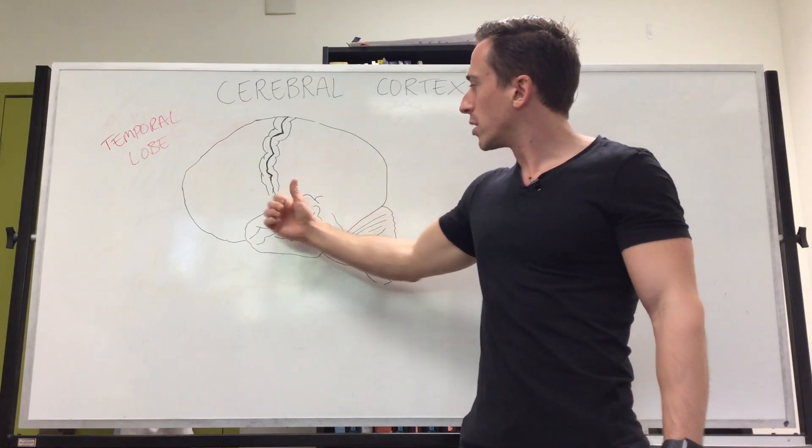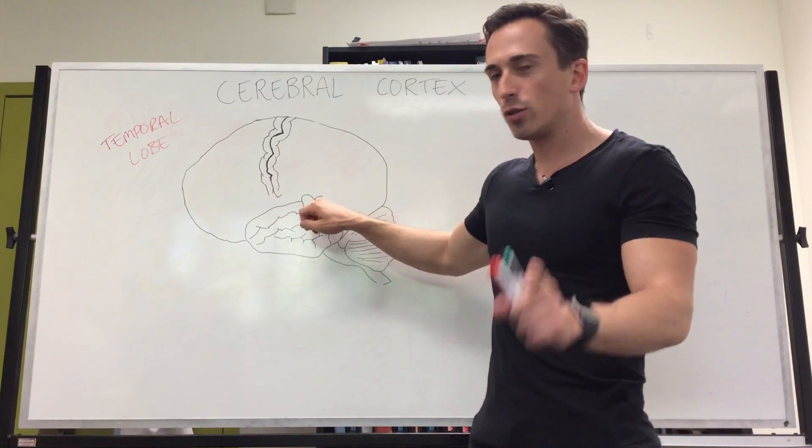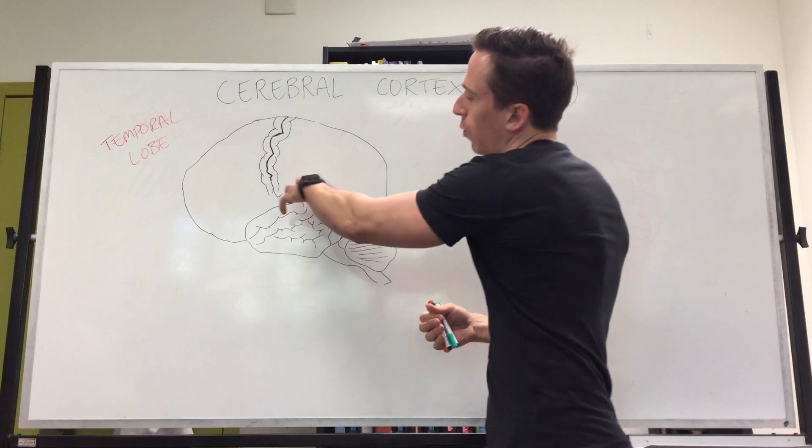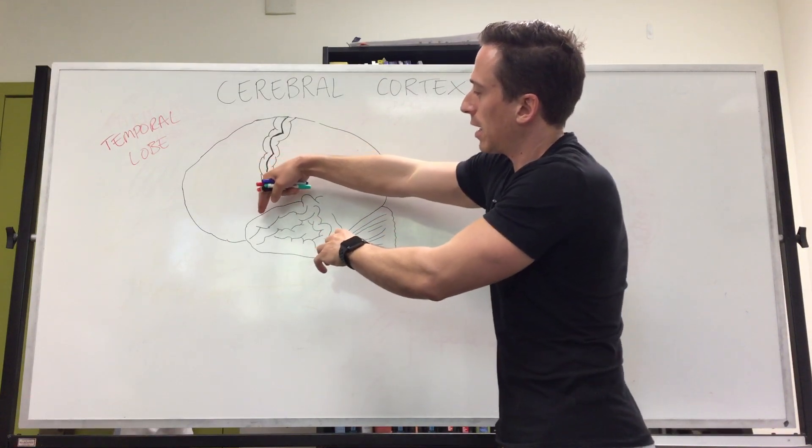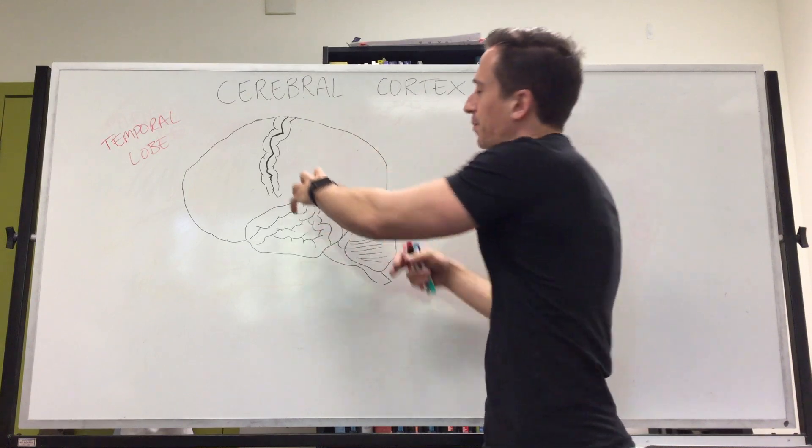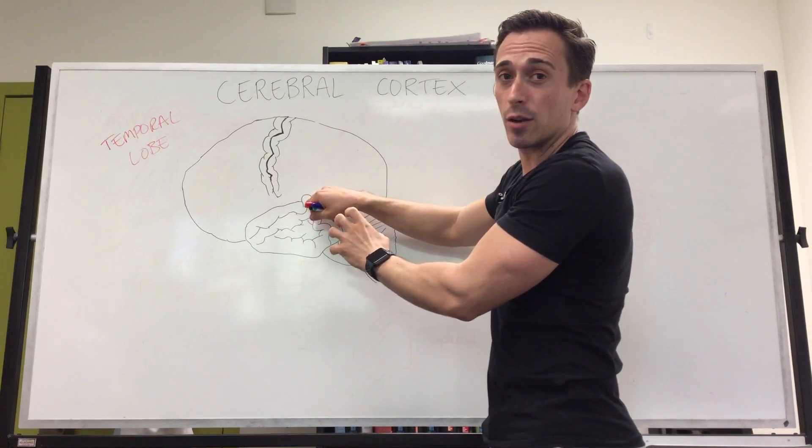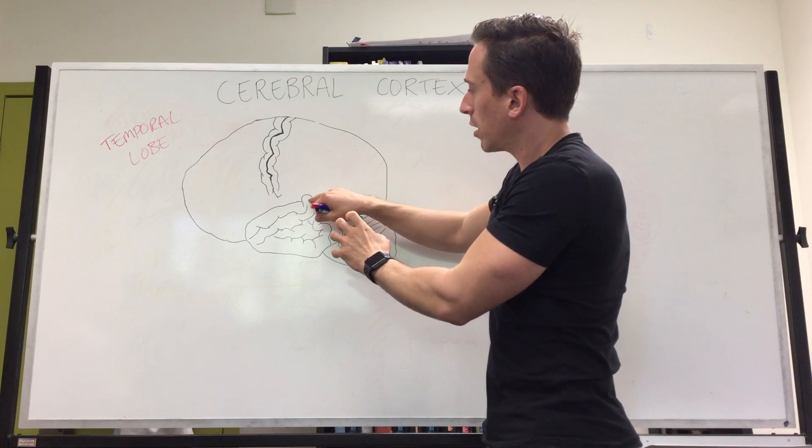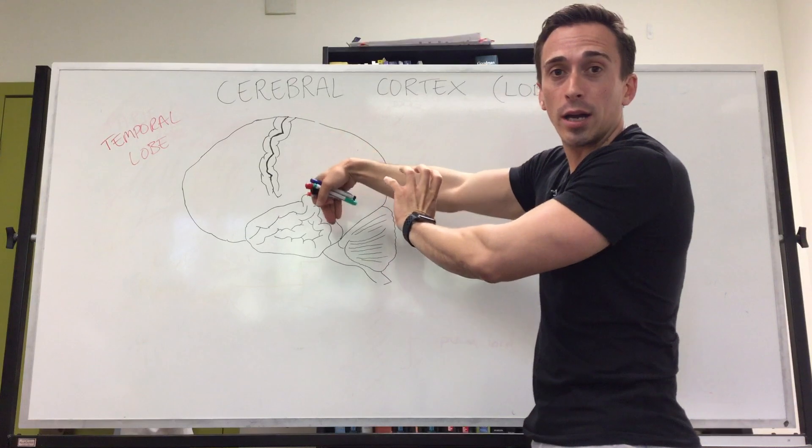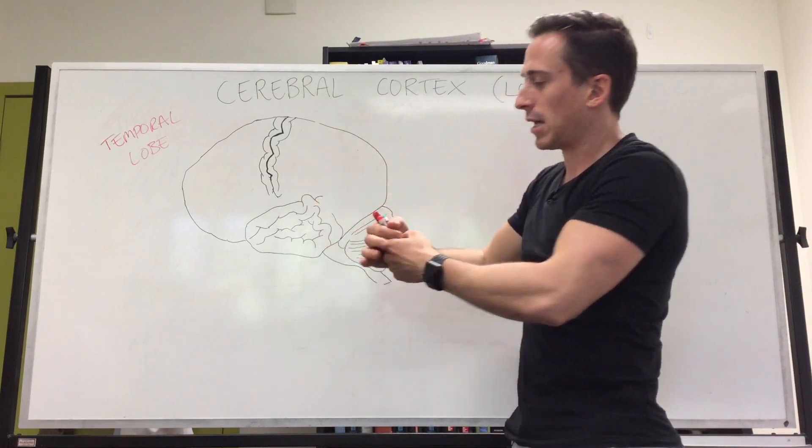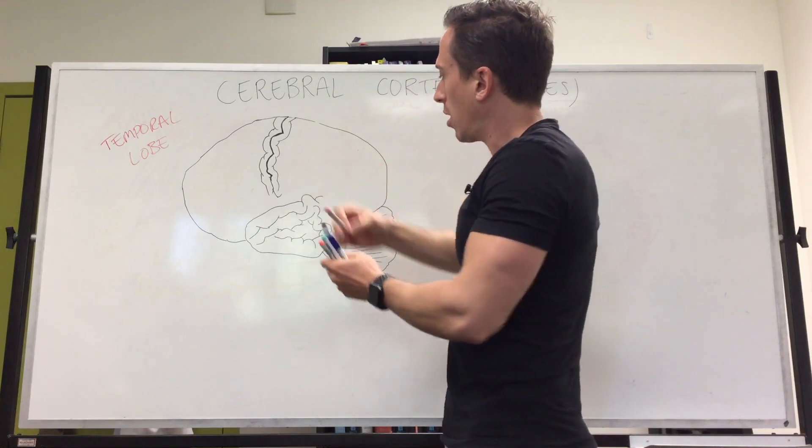If we look at the most posterior end of the superior gyrus and pull into the lateral fissure at the posterior end of the temporal lobe, you've got gyri that fold in and behind. These gyri are called the transverse gyri—they fold in and behind.